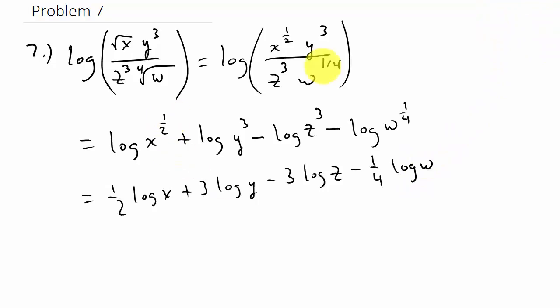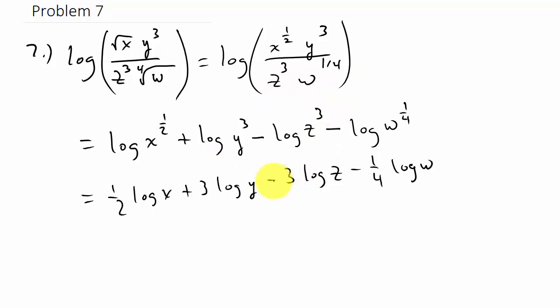Just remember: whatever is multiplied across the top gets a plus sign in front, and whatever is in the denominator gets a minus sign in front.